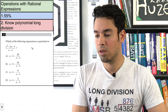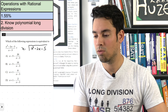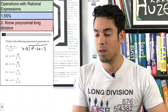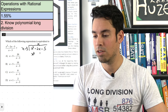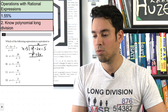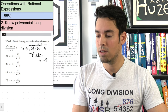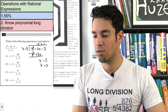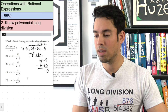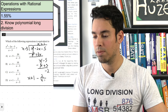To divide x² − 2x − 5 by x − 3: first, x² divided by x gives x; distribute to get x² − 3x; subtract, giving x; bring down −5. Then x divided by x gives 1; distribute to get x − 3; subtract and the remainder is −2. The final answer is x + 1 minus 2 over (x − 3), which is answer D.